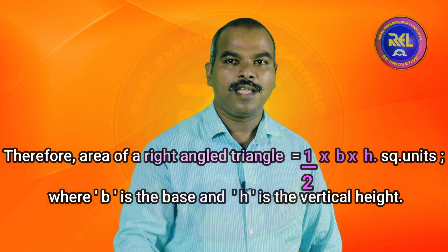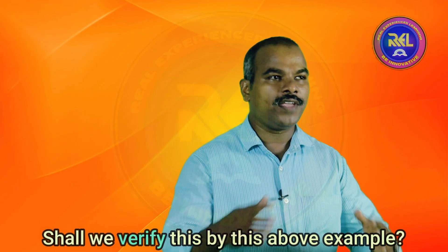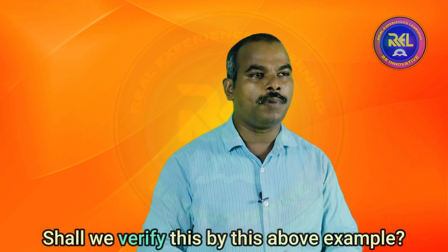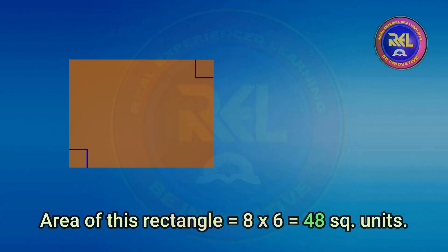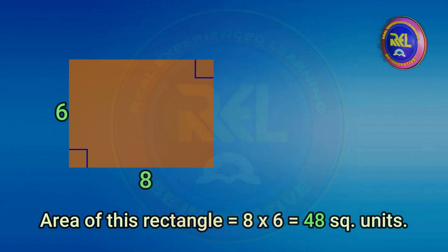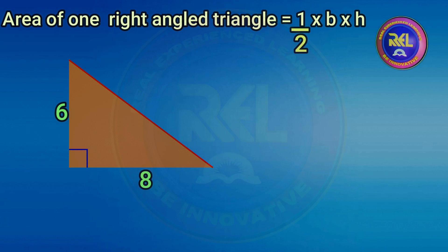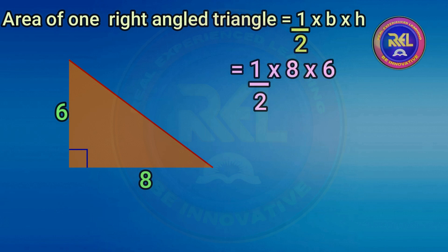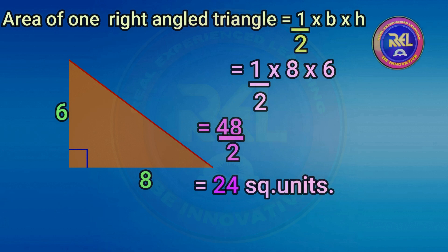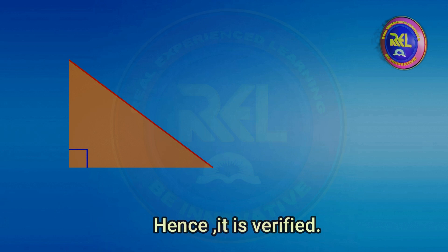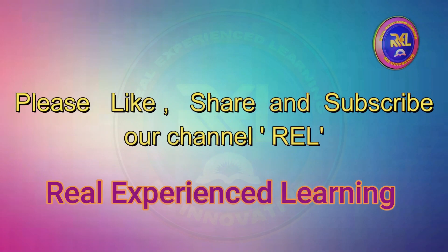Where B is the base and H is the vertical height. Shall we verify this by the above example? Area of this rectangle is equal to 8 into 6, that is 48 square units. Area of one right-angled triangle is equal to half B H, that is half into 8 into 6, which equals 48 by 2, that is 24 square units. Hence, it is verified. Please like, share and subscribe our channel REL. Thank you.